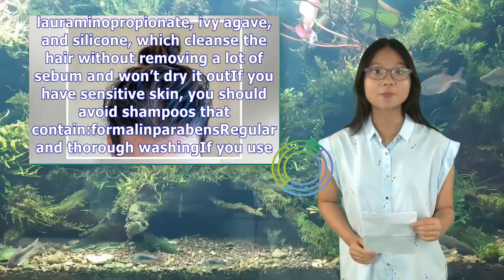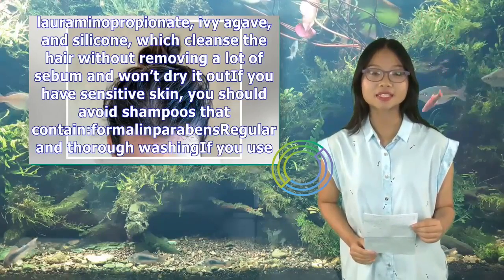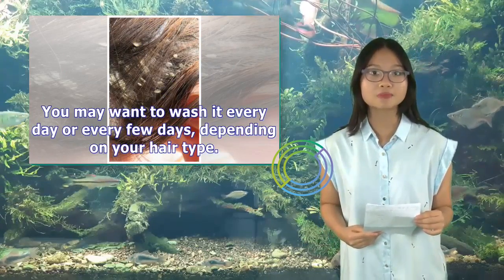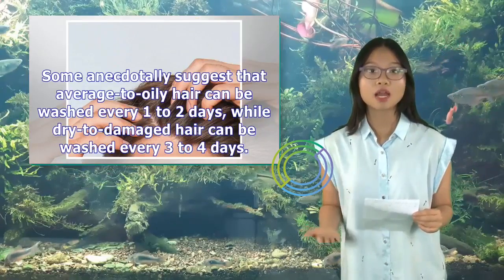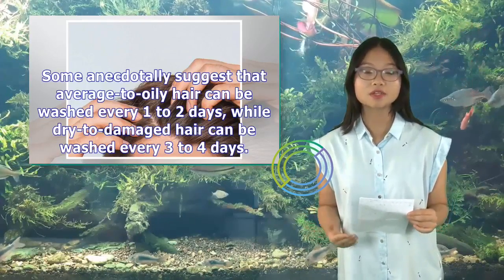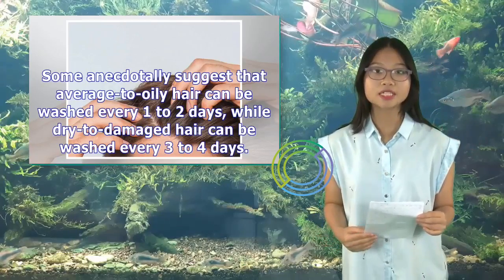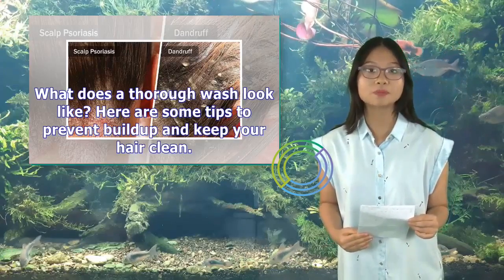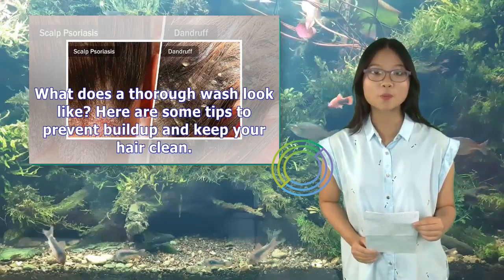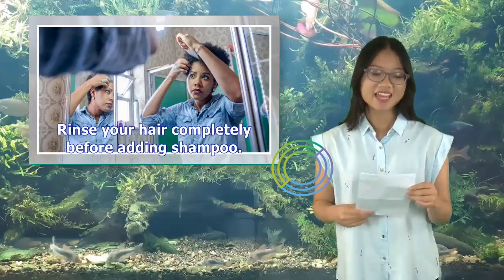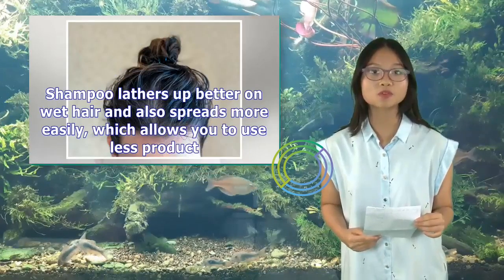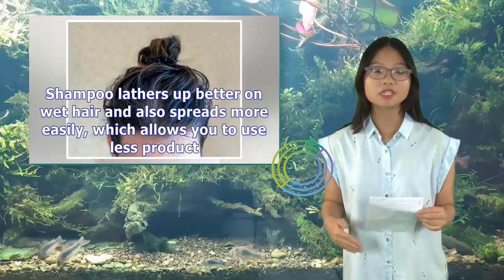Regular and thorough washing is also important to wash your hair regularly to get rid of buildup. You may want to wash it every day or every few days depending on your hair type. Average to oily hair can typically be washed every 1 to 2 days, while dry to damaged hair can be washed every 3 to 4 days. Rinse your hair completely before adding shampoo — shampoo lathers up better on wet hair and spreads more easily, allowing you to use less product. You can also mix your shampoo with water first before applying.